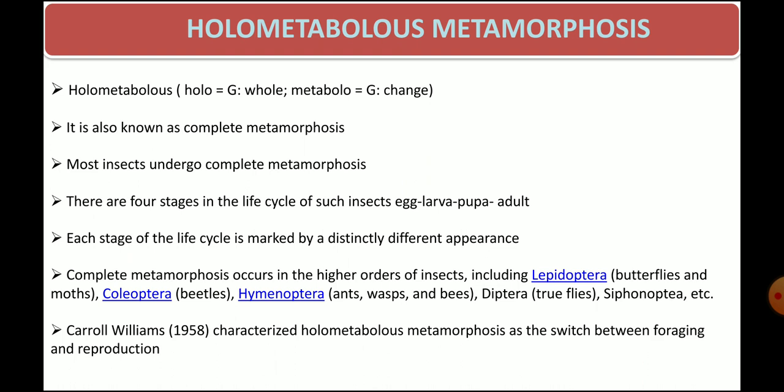Carl Williams characterized holometabolous metamorphosis as a switch between foraging and reproduction. This kind of metamorphosis occurs in higher orders of insects including Lepidopterans (e.g. butterflies), Coleopterans (e.g. beetles), Hymenopterans (e.g. wasps and ants), and Dipterans (e.g. true flies), etc.